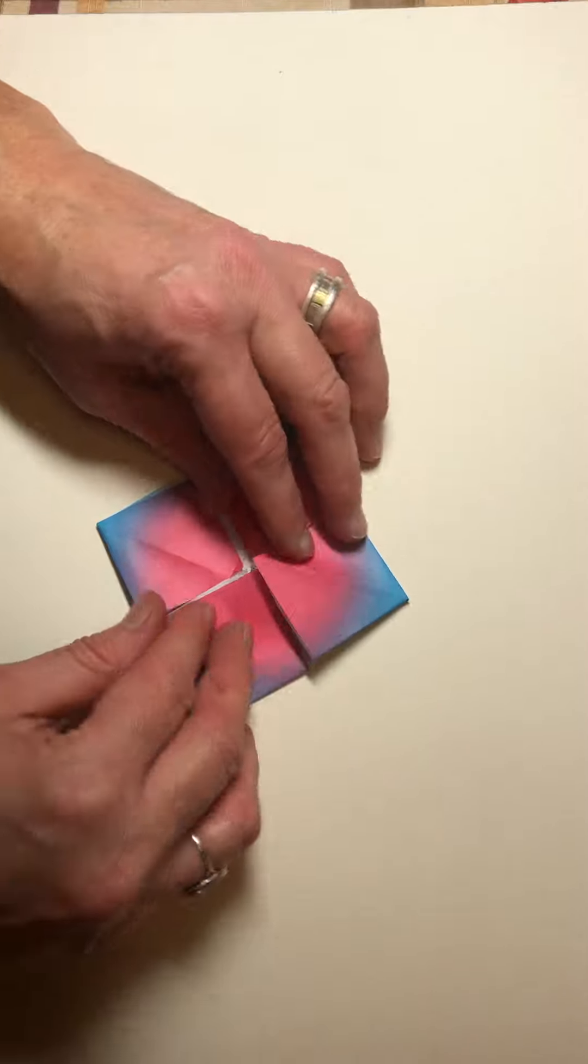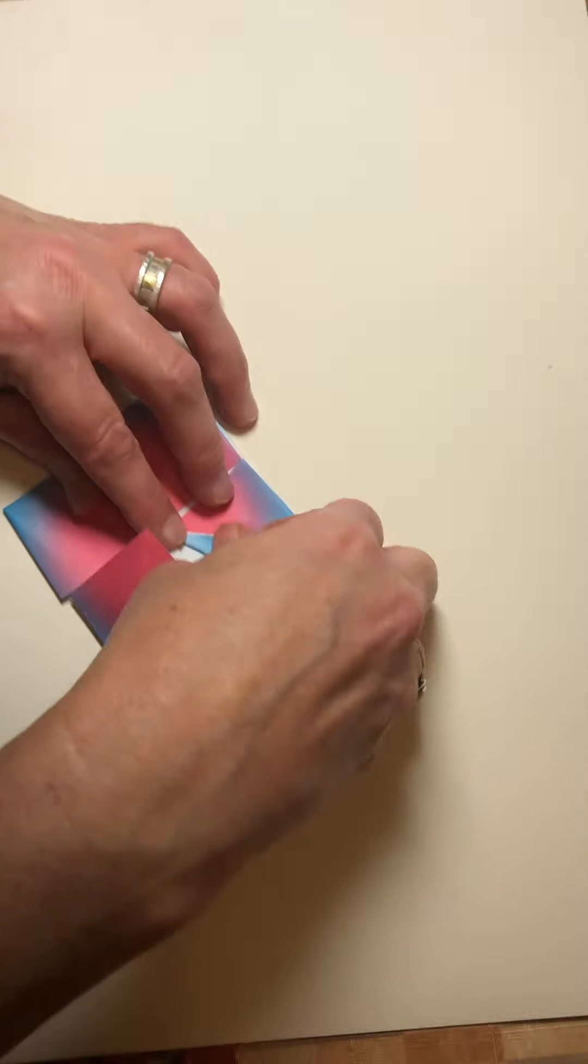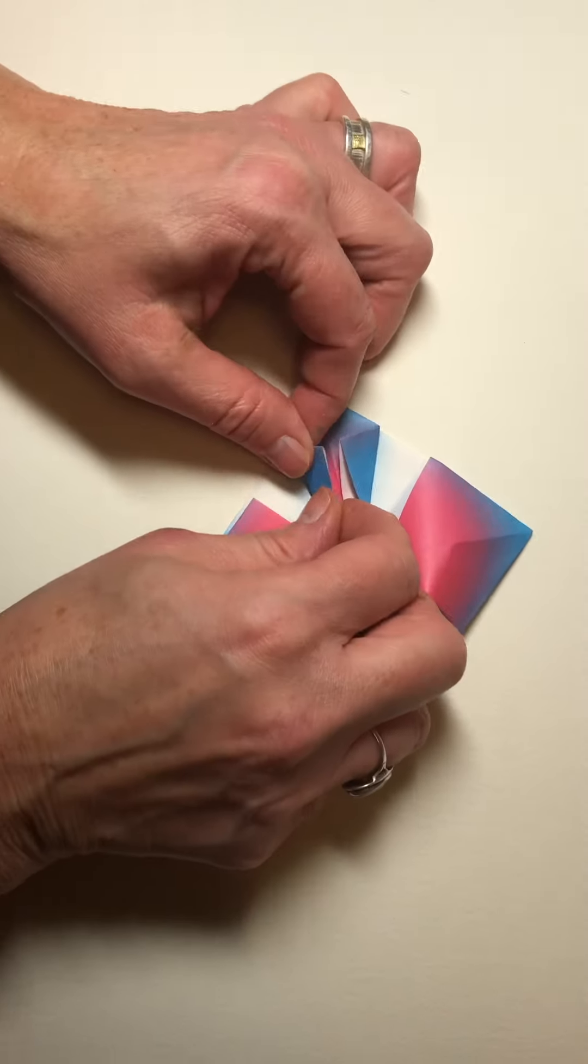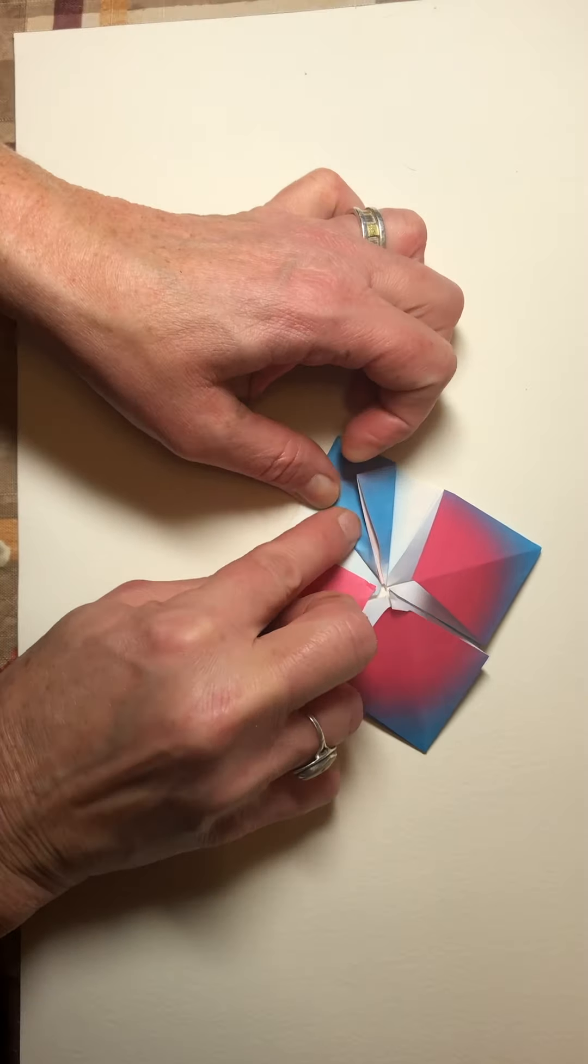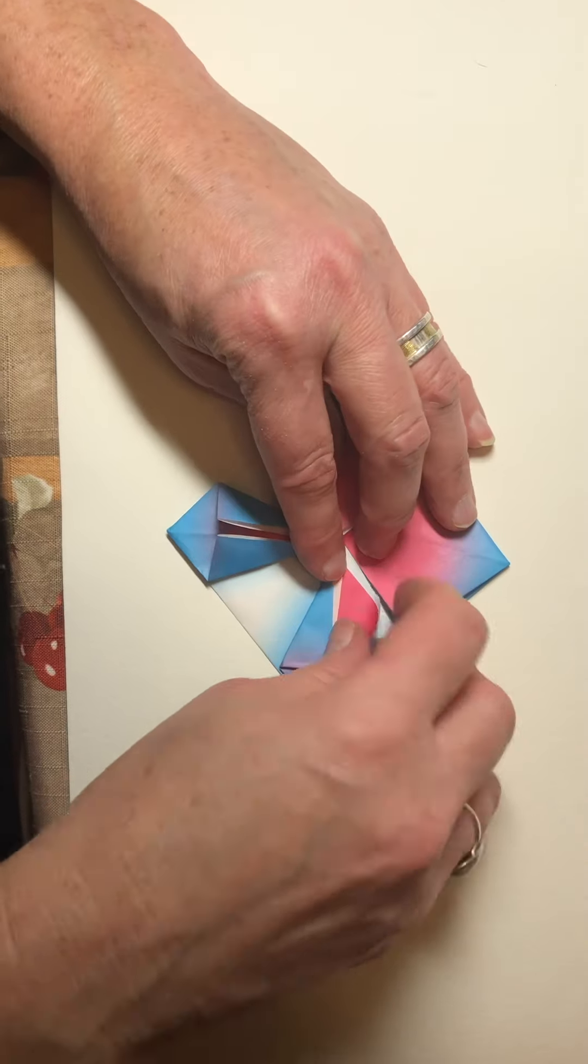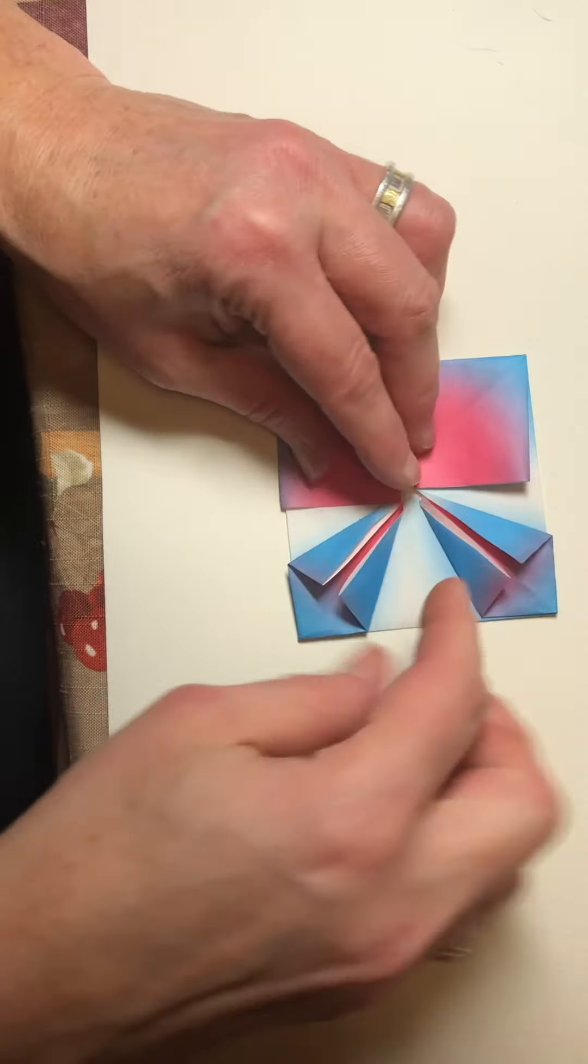Then we have all these little squares, and we want to fold the open edges where we can see that into the white area to the center. And it looks like a little kite. We're gonna do that on all four of those. That one's a little messy. So we're gonna do that all the way around.